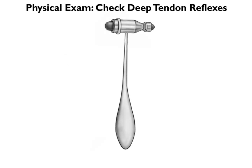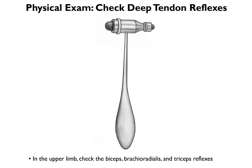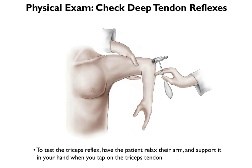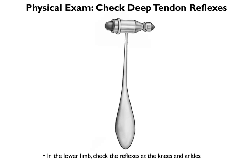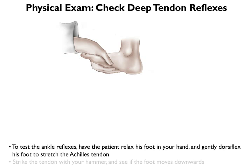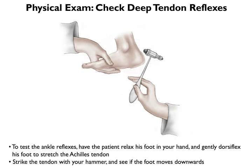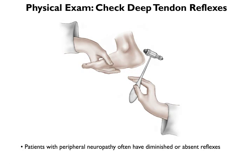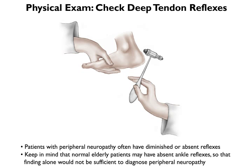Finally, use your reflex hammer to check their reflexes. In the upper limb, check the biceps, brachialis, and triceps reflexes. The most reliable way to test the triceps reflex is to have the patient relax his arm and support it in your hand when you tap on the triceps tendon. In the lower limb, check reflexes at the knees and ankles. To test the ankle reflex, have the patient relax his foot in your hand and gently dorsiflex his foot to stretch the Achilles tendon, then strike the tendon with your hammer and see if the foot moves downward. Patients with peripheral neuropathy often have diminished or absent reflexes. Keep in mind, though, that even normal elderly patients may have absent ankle reflexes, so that finding alone would not be sufficient to diagnose peripheral neuropathy.